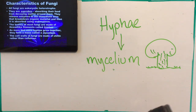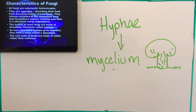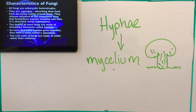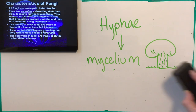Fungi have cell walls just like plants — we used to think they were plants. But the cell walls are not made of cellulose like a plant's; they're made of chitin — C-H-I-T-I-N — a different material that makes up the cell wall of a fungus as opposed to a plant.